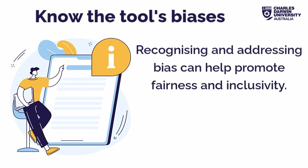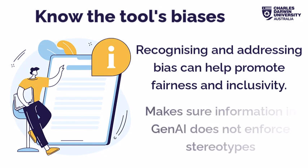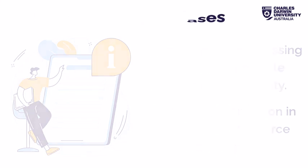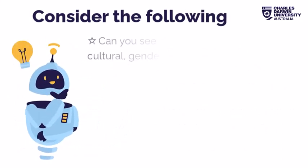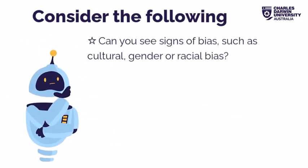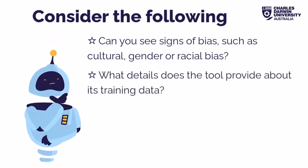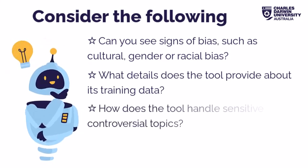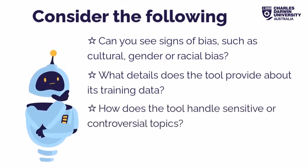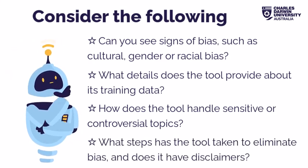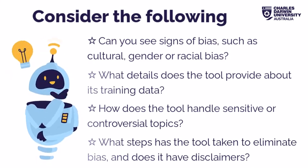Recognising and addressing biases in Gen AI output is important for promoting fairness and inclusivity. It helps ensure that the information generated by Gen AI doesn't reinforce stereotypes or discriminate against any particular group. Consider: can you see signs of bias such as cultural, gender or racial bias? What details does the tool provide about its training data? How does the tool handle sensitive or controversial topics? What steps has the tool taken to eliminate bias, and does it have any disclaimers?